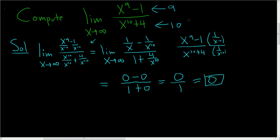And again, the trick is this. If the degree is bigger on the bottom and you're approaching infinity or negative infinity, the answer is always 0.